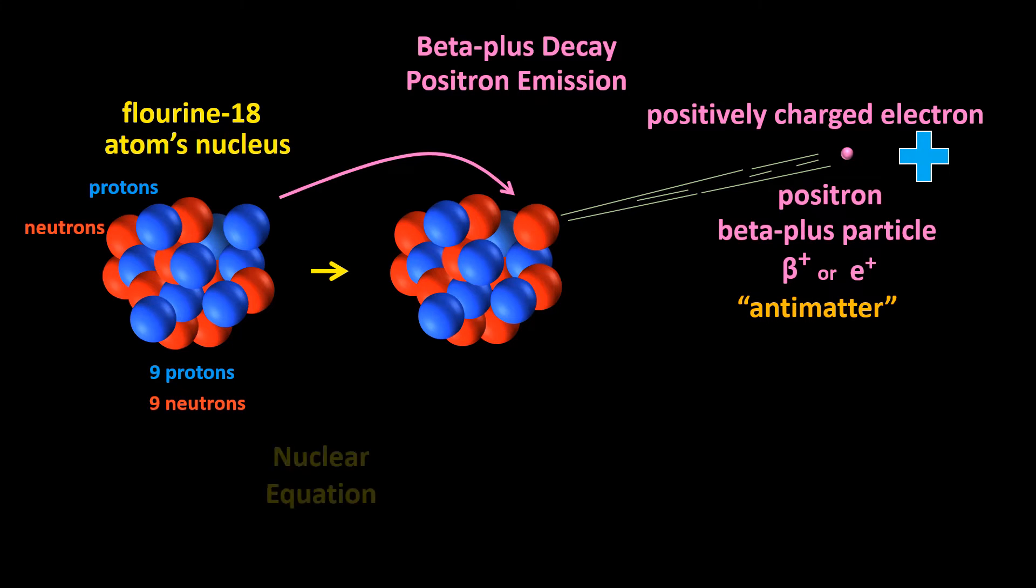Let's write the nuclear equation. We start with a fluorine 18 atom. In atomic notation, this is written as 18,9F. One of the protons turns into a neutron and a beta plus particle. The beta plus particle can be written in atomic notation as 0,1 beta or as 0,1 E.